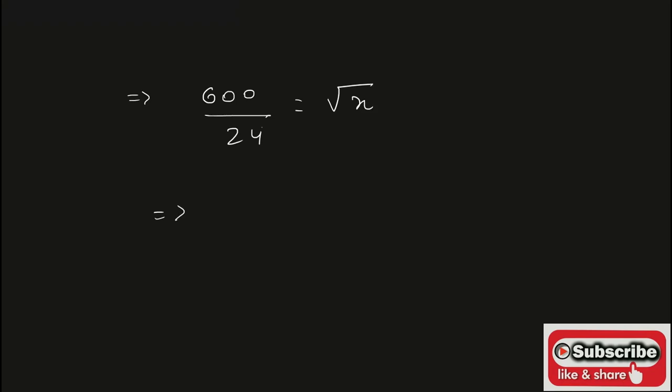Cancel the terms: 24 goes into 600 twenty-five times. Square root of x is equal to 25. Now to find the value of x, squaring on both sides.